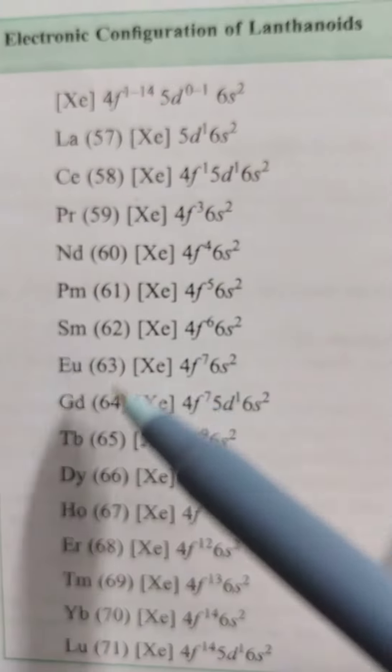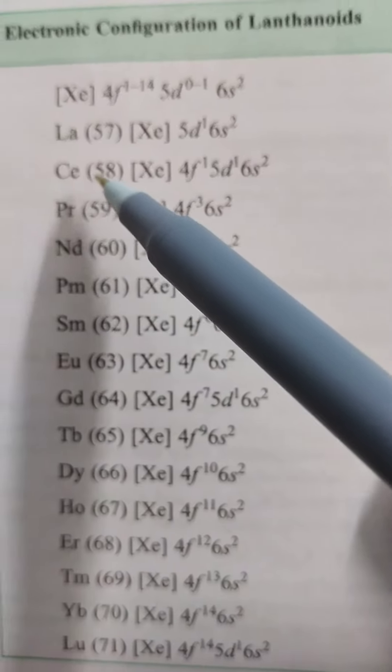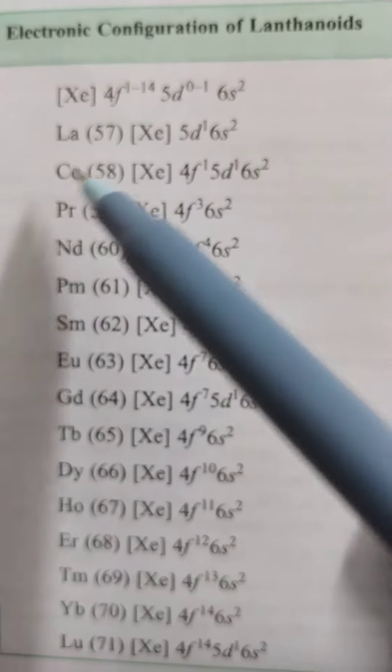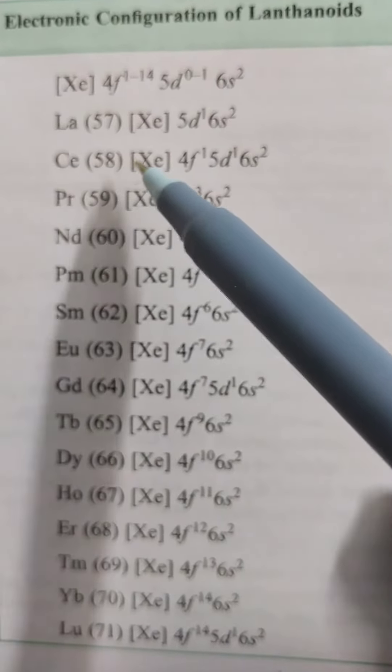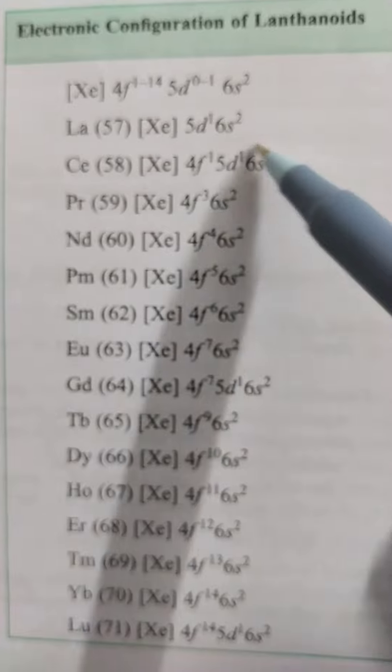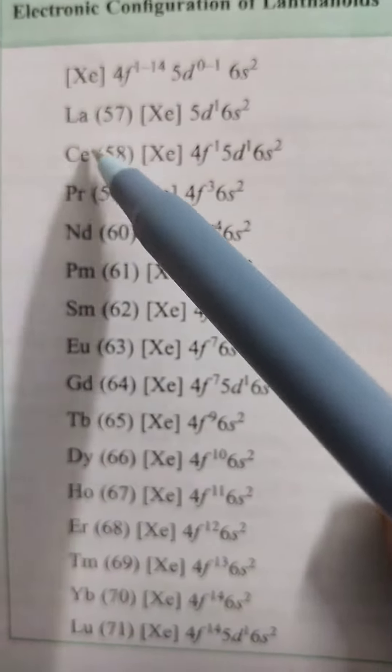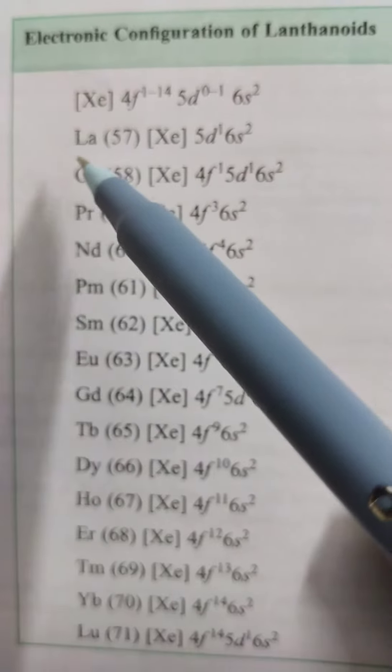You want to see lanthanoid configuration. You see lanthanum 57, xenon 5d^1 6s^2, cerium 58, xenon 4f^1 5d^1 6s^2. It loses 4 electrons with Ce+4, Ce+4 converted to xenon 54.